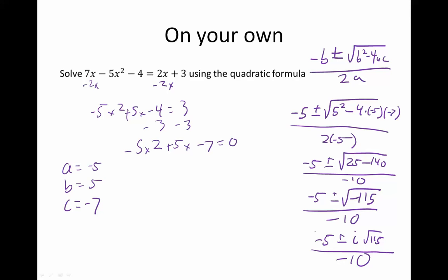And because i is not divisible by 5, we don't reduce it any further. And this is our final answer, negative 5 plus or minus i root 15, because the negative comes out as an i. And that's all over negative 10.